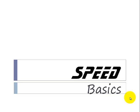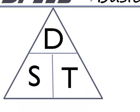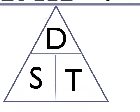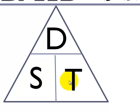Welcome to the topic of speed. Today we are going to look at the basics of speed. Speed is related to distance and time. This triangle with d, s and t on it will be helpful to remember the relationship between speed, distance and time.